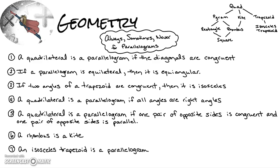Number one: a quadrilateral is a parallelogram if the diagonals are congruent. That would be sometimes true — I'll put an S for sometimes — because in an isosceles trapezoid the diagonals are also congruent, so it would sometimes be a parallelogram and other times be an isosceles trapezoid.